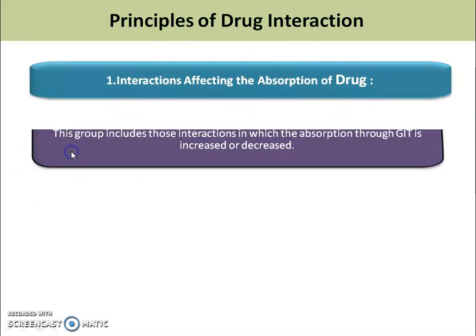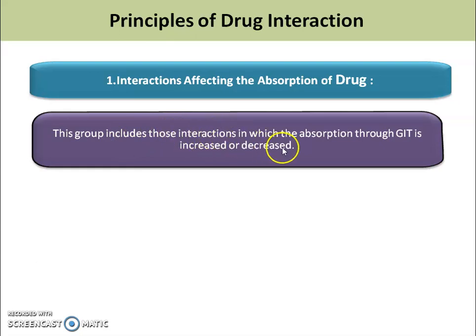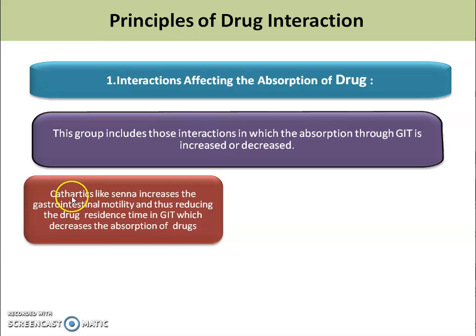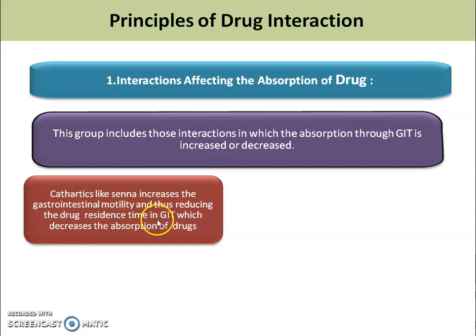First, interaction affecting the absorption. This group includes interactions in which absorption through the GIT is increased or decreased. For example, cathartics are drugs responsible for drastically loosening of the bowel. Cathartics like Senna increase gastrointestinal motility, thus reducing the drug residence time in the GIT. That means cathartics increase GIT motility, decreasing drug residence time, which decreases absorption of the drug.